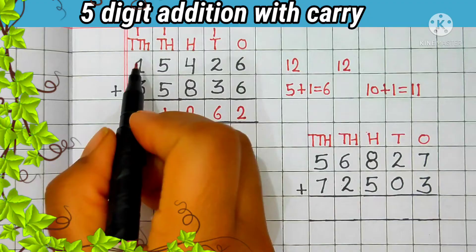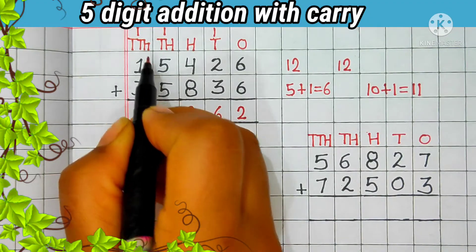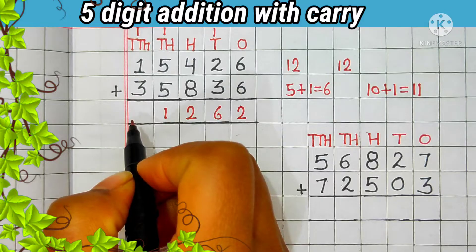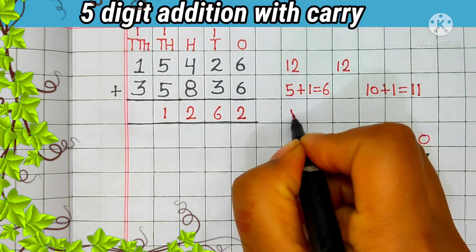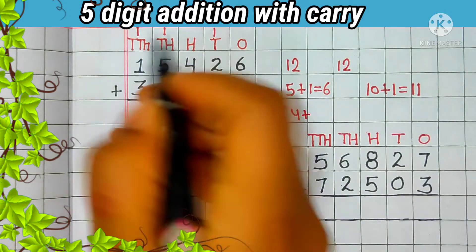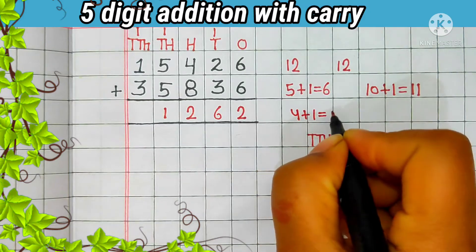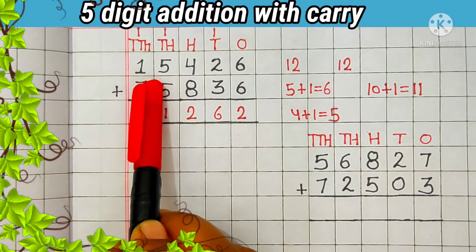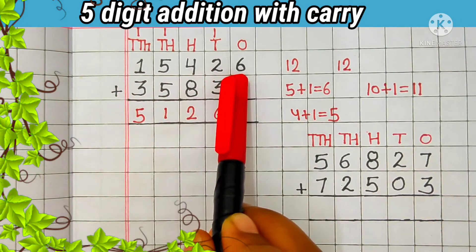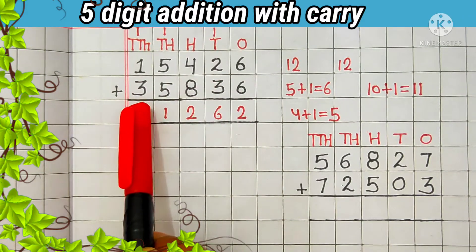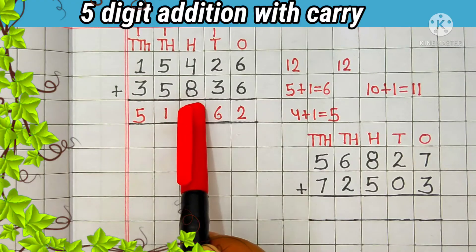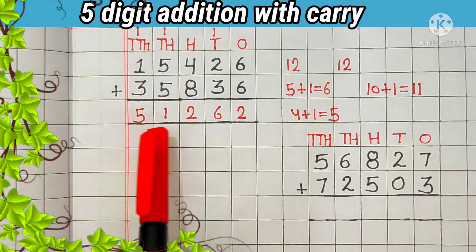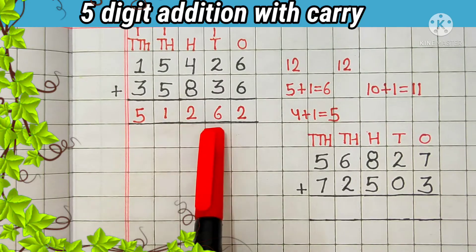Then let's add the digit at the 10,000s place. 1 plus 3 is equal to 4; 4 plus 1 carry is equal to 5. Answer is 5. So 15,426 plus 35,836 is equal to 51,262.